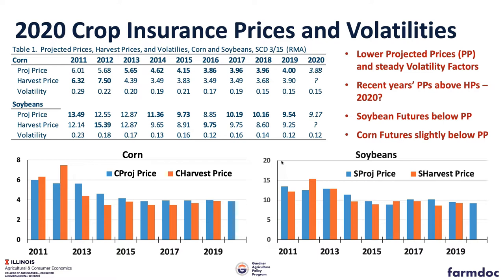The lower the volatility, the less expensive crop insurance should be. Likewise, the lower the projected price, the less costly crop insurance is when denominated in revenue, because you're starting with a lower multiple to multiply your eventual bushels by. The graphs show how high 2012 and follow-on 2013 were relative to the recently stable period since that point in time.